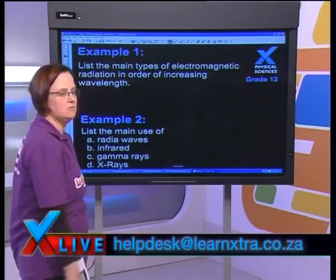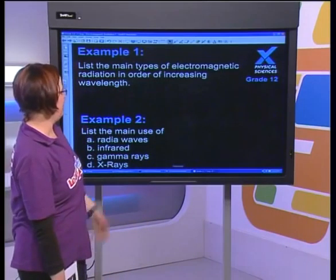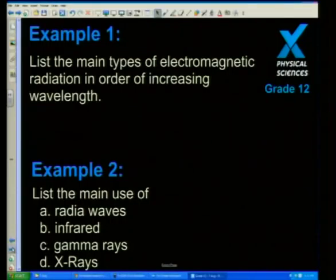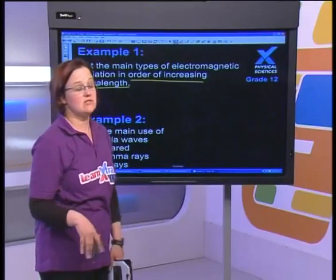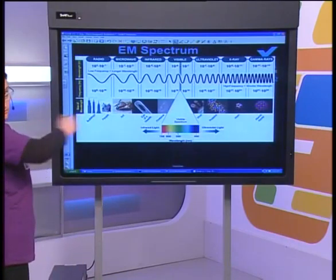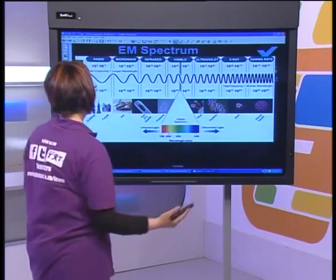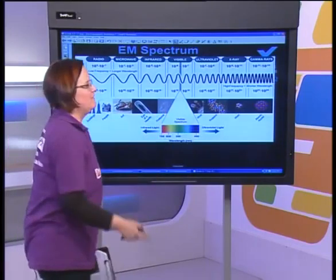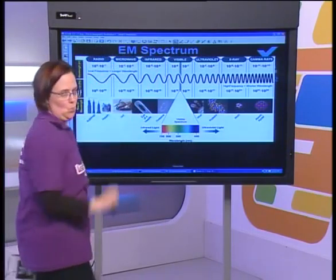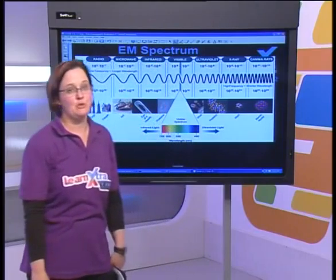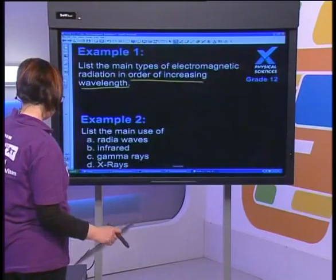First example: list the main types of electromagnetic radiation in order of increasing wavelength. Be careful — don't just list them in any order. The answer going from shortest to longest wavelength is: gamma, x-ray, ultraviolet, visible, infrared, microwave, radio. Find a way to remember that — make a mnemonic, make up a rhyme, whatever you need.